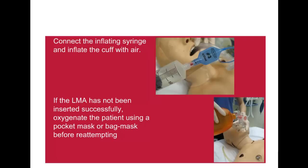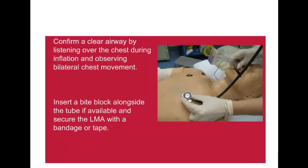Connect the inflating syringe: usually 25ml of air is required for a size 3, 30ml for a size 4 and 40ml for a size 5 LMA. If the LMA has not been inserted successfully, re-oxygenate the patient before re-attempting if possible. A clear airway should be confirmed by visual assessment of bilateral chest movement and auscultation of breath sounds. It is reasonable to insert a bite block alongside the LMA tube if available, and secure the LMA with a bandage or tape.